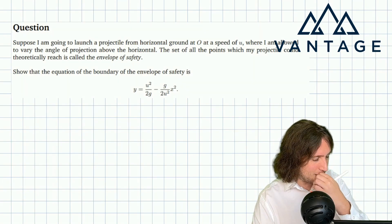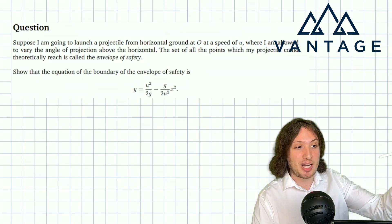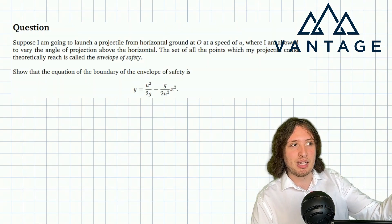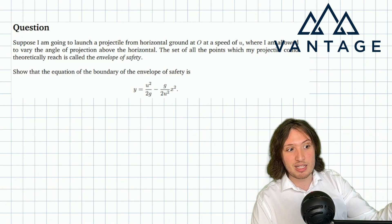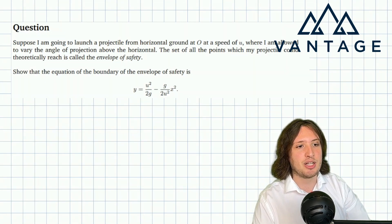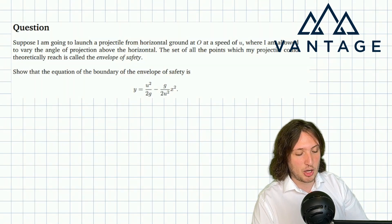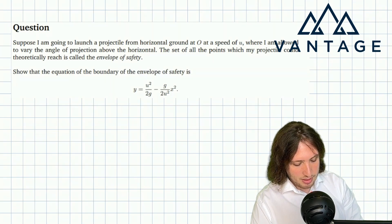This is a little bit different from a normal projectiles problem in that rather than talking about the angle of projection and the trajectory it follows, we're considering all the different possible trajectories that we could sweep out if we varied the angle of projection. We want to show that the equation of the boundary of the envelope of safety is this particular equation.